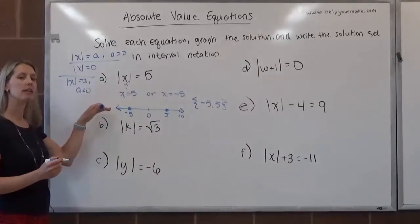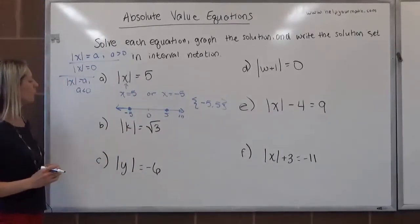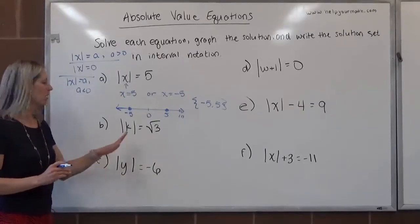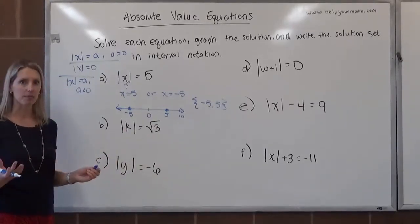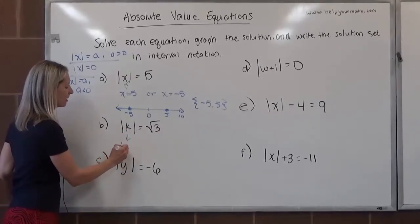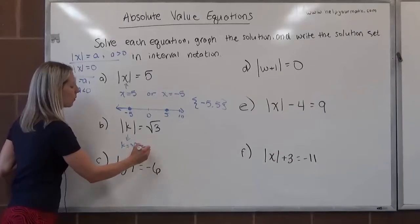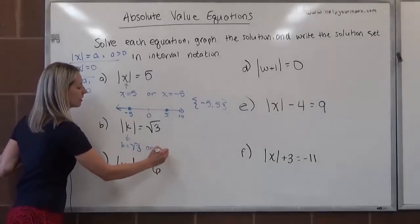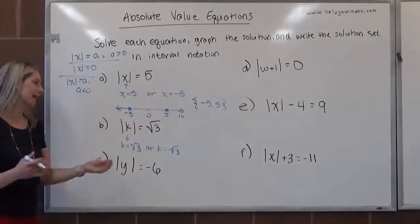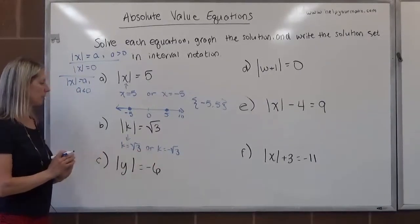So we can represent it algebraically, on a graph, or in interval notation. Looking at letter B, we have the absolute value of k is equal to the square root of 3. The absolute value is by itself, so inside the absolute value, k could equal the square root of 3, or k could be the negative square root of 3. There's no additional work. k is isolated in either of these two cases, so this would be the final solution set.